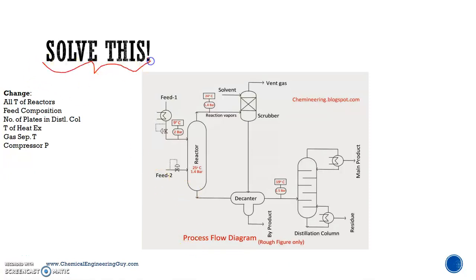So imagine we have to solve this. This is a chemical plant with a reactor right here, it has a scrubber, it has a decanter which separates liquid from maybe other solids or a by-product, and we have this distillation column. So let's say we have all the temperatures, feed composition, and number of plates, we have everything to calculate the process.